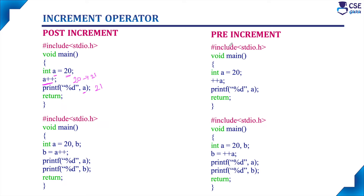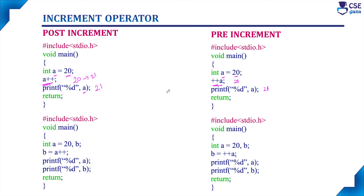Next, consider the example for pre-increment. In pre-increment also, we have used an integer variable a and the value 20 is assigned. This is a pre-increment, so the variable value will get incremented by 1. Here also, in this statement, the value will get incremented to 21. And if you are asking to print, it will print 21 only. So here we didn't find any difference — with a single statement of post-increment or pre-increment, both operators increment the value by 1 and print 21.